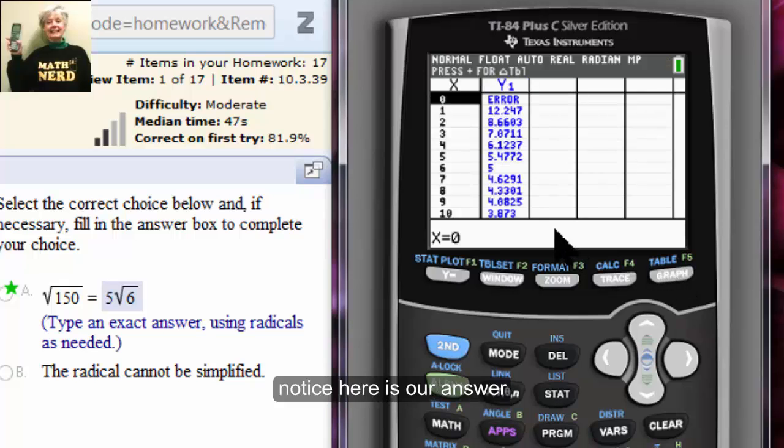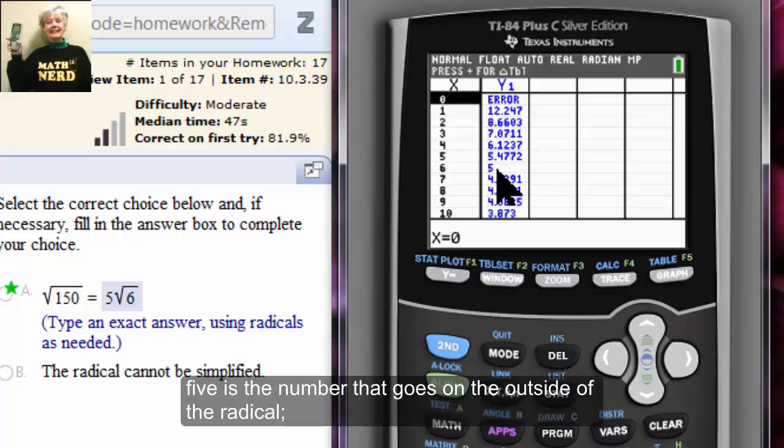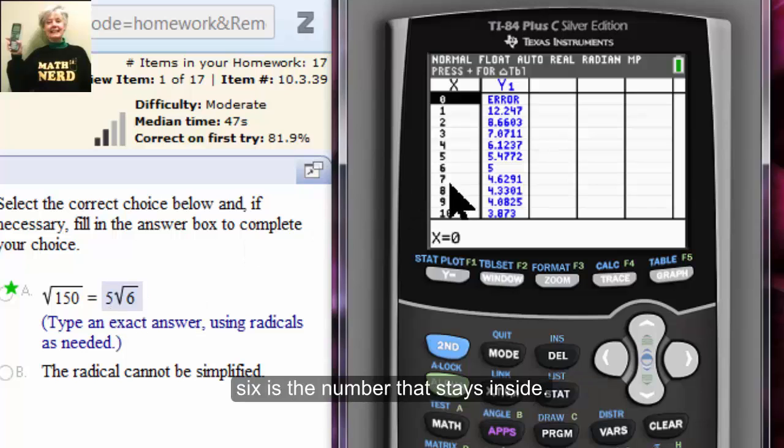Notice here is our answer. 5 is the only number that doesn't have a lot of decimal places. 5 is the number that goes on the outside of the radical. 6 is the number that stays inside.